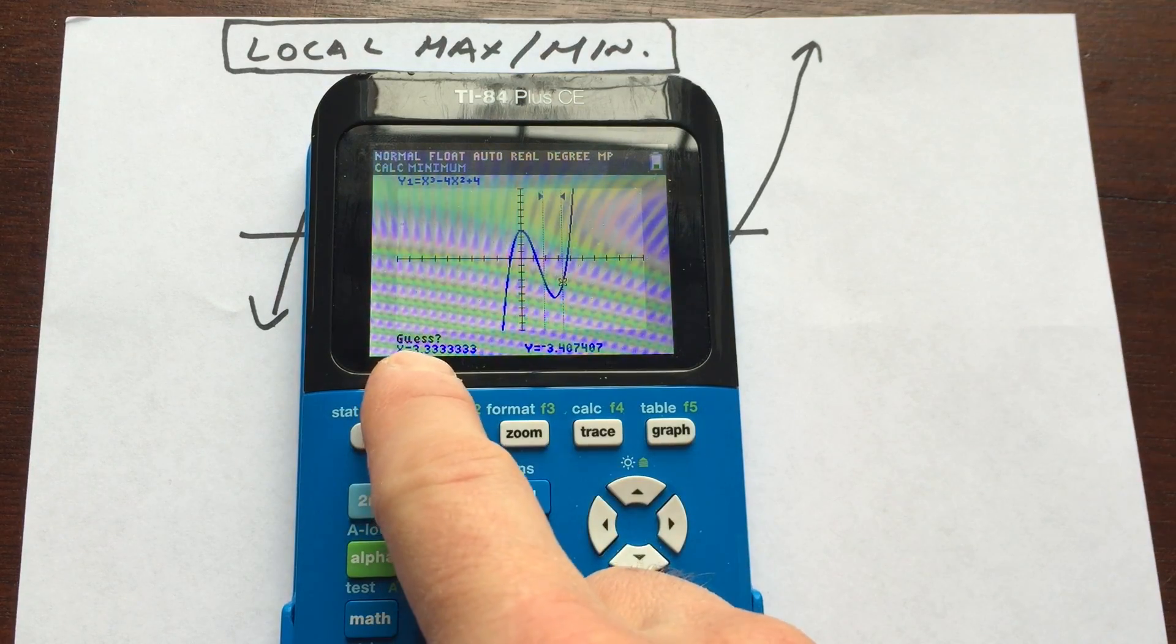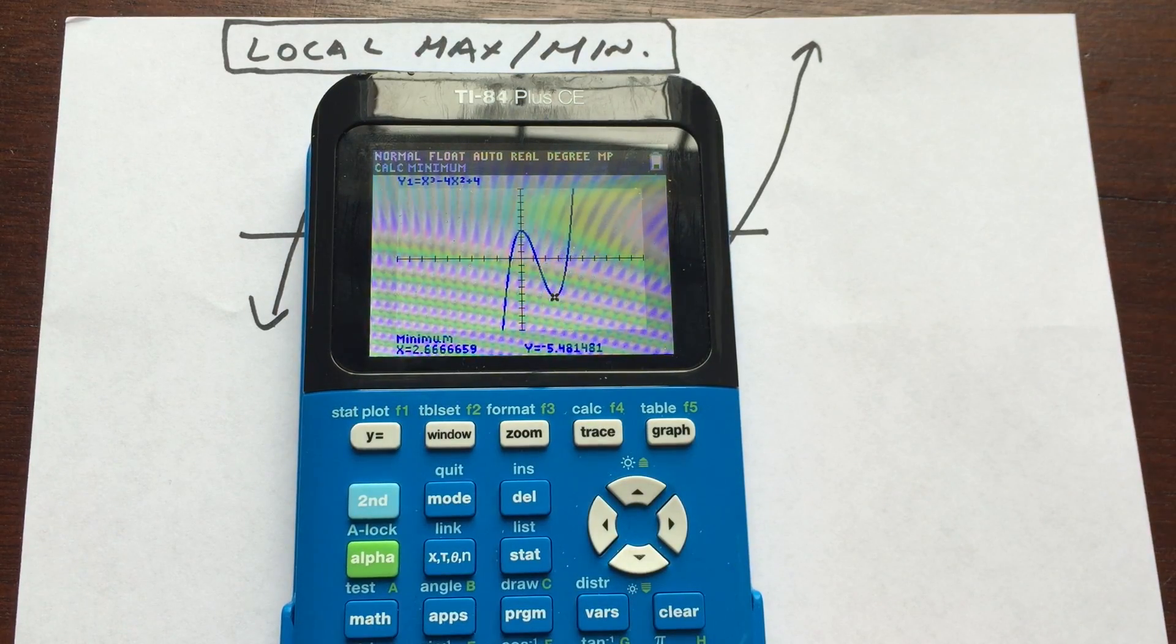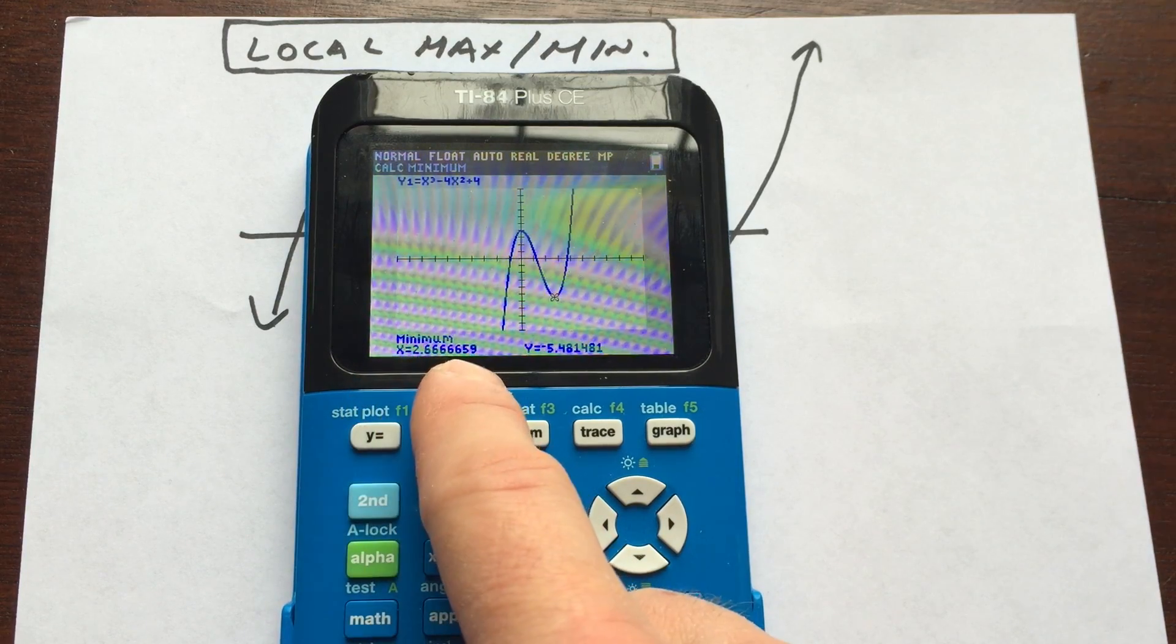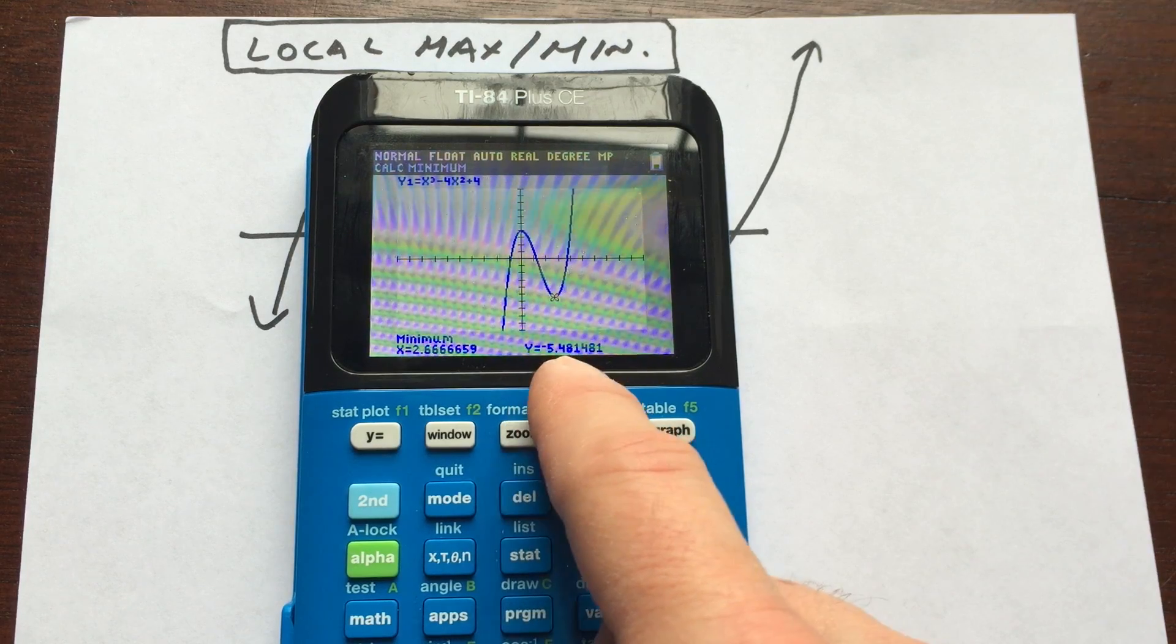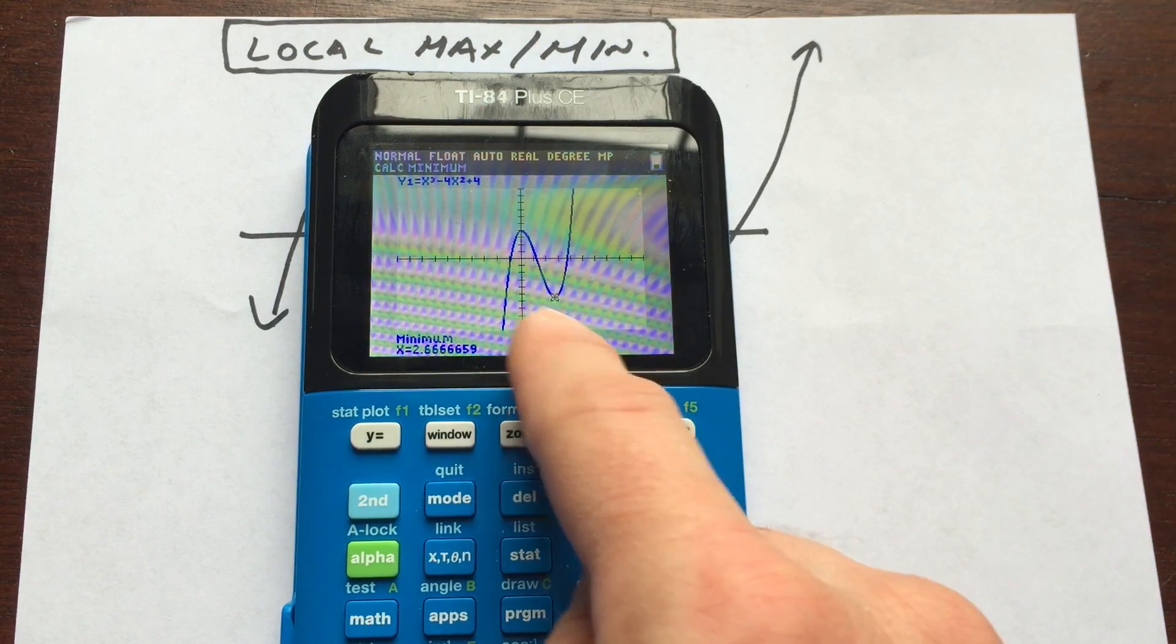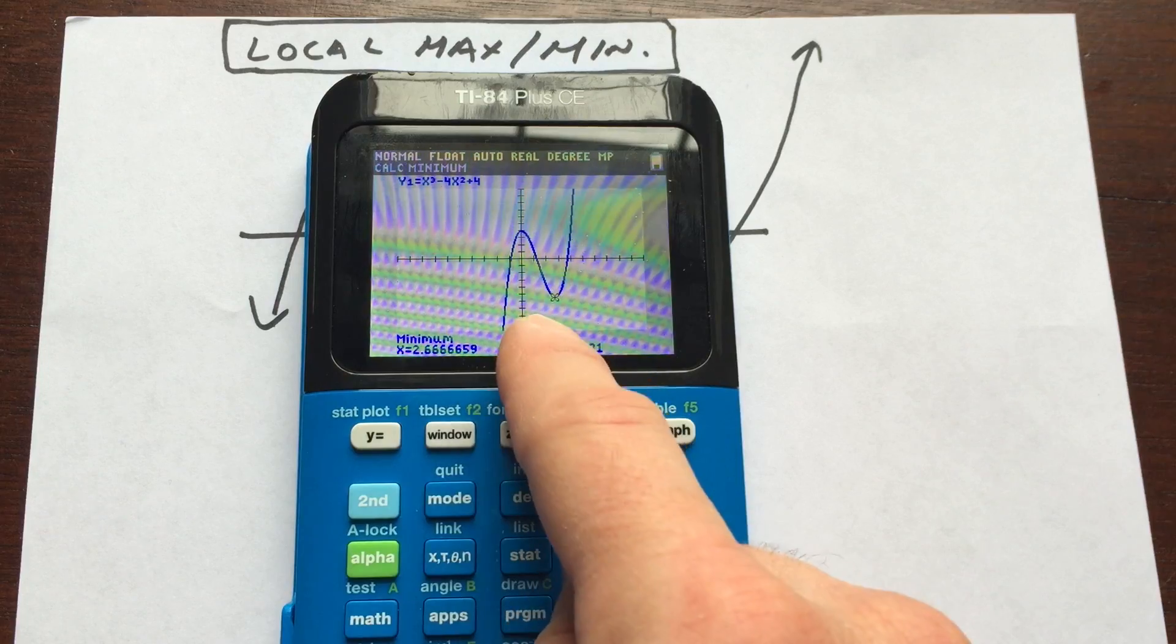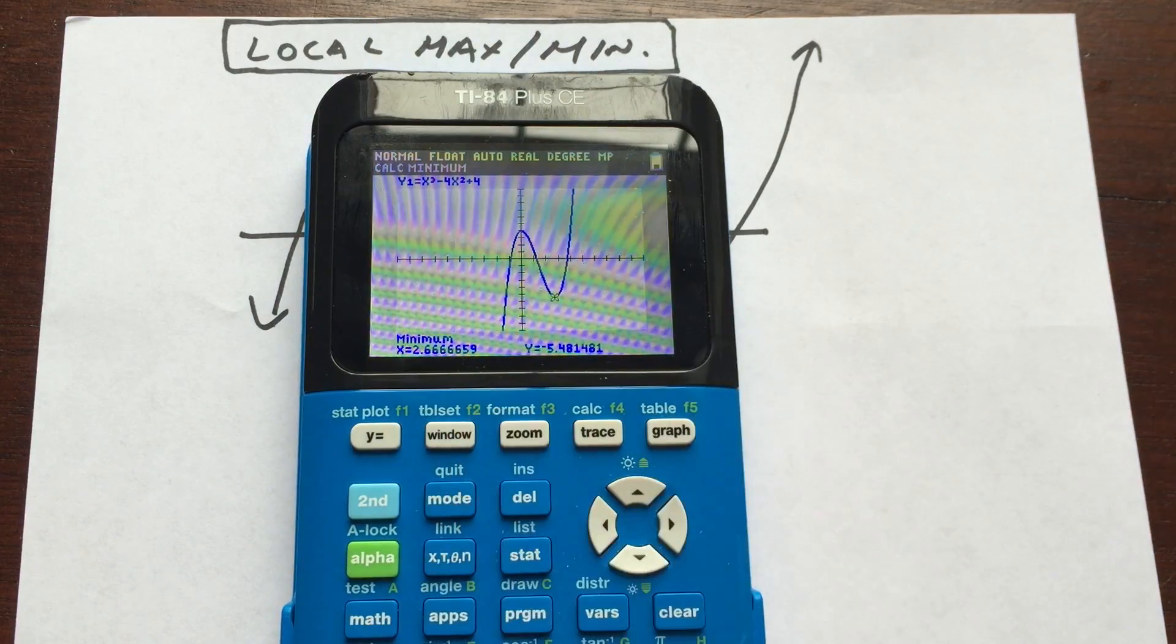And it says guess. You can see. I'm going to press enter one more time. And you can see it's at 2.67 approximately. And the y value is like about negative 5.5 if you round. So that's how you find the local maximums and local minimums using your graphing calculator. I'll see you in the next video.